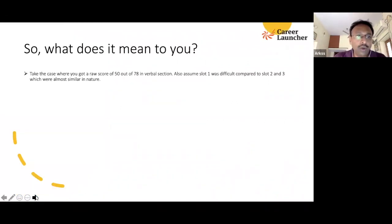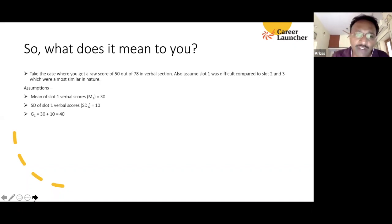What does it mean to you? Take the case where you got a raw score of 50 out of 78. I'm not changing the number of questions. Let's say there are still 26 questions in the verbal section. This could be 23, 24, 25, 26, doesn't matter, it'll be similar. Let's say you got 50. Wow, that's great. Also, if you assume that slot 1 was difficult compared to slots 2 and 3, and let's say for simplicity sake 2 and 3 are very similar in nature, what happens then? Let's say the mean of slot 1 verbal is 30, the SD is 10, therefore G1 is 40. Mean of the 0.1% - now the toppers will not change - let's say that's 72. It could be 68 also, I'm just giving you a number, 72 for the absolute top 0.1 percentile students.